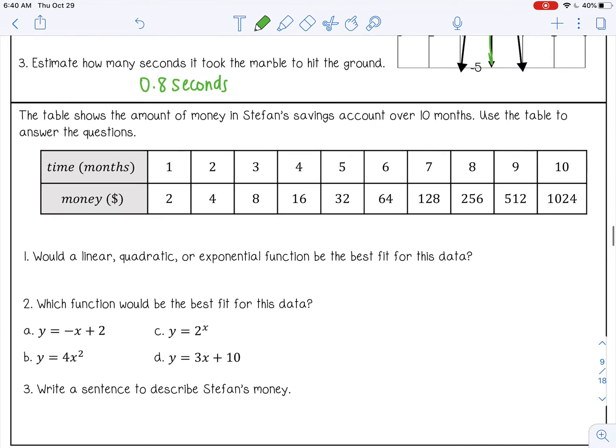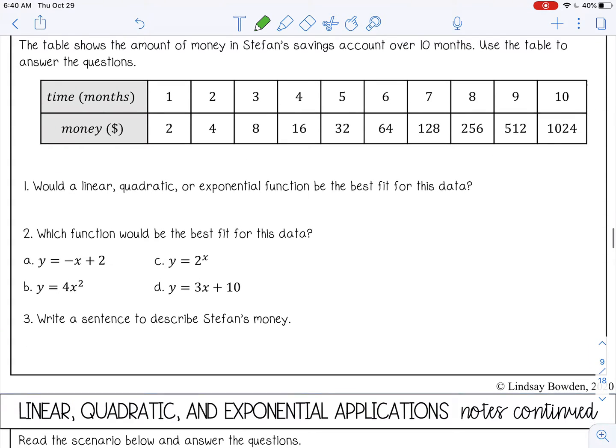So let's make sure our X values are evenly spaced. One, two, three, four, five. Yep, we're good there. And then let's check for linear first. So plus two, plus four, plus eight. Definitely not linear. Let's check for quadratic. So that would be plus two, plus four, plus eight. It's not quadratic. They're not all the same. So that means it's probably exponential. But let's make sure.